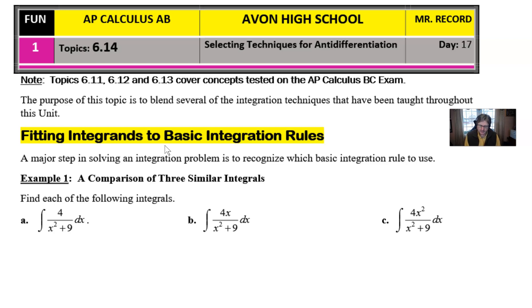So for our example one, a comparison of three similar integrals, find each of the following. Notice each one of these looks strikingly familiar. They only have differing numerators. The denominator x squared plus 9 seems to be consistent, but the numerators change from a 4 to a 4x to a 4x squared. And that drastically changes the strategy by which you integrate.